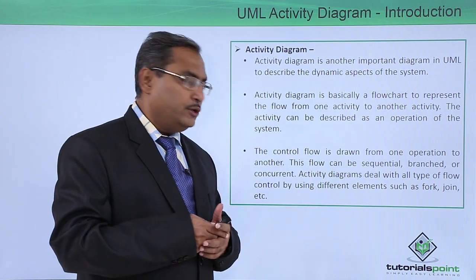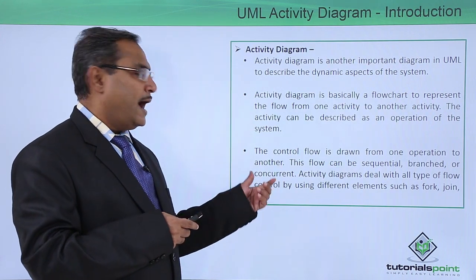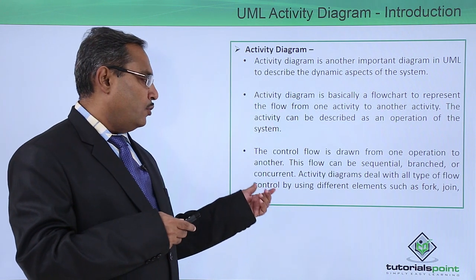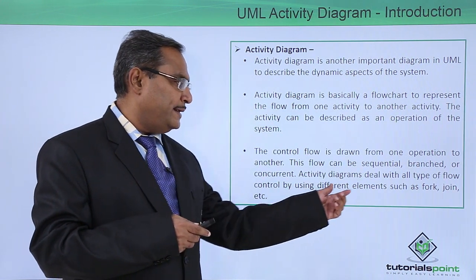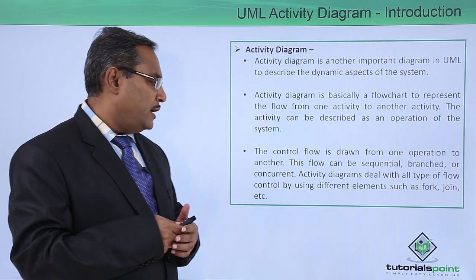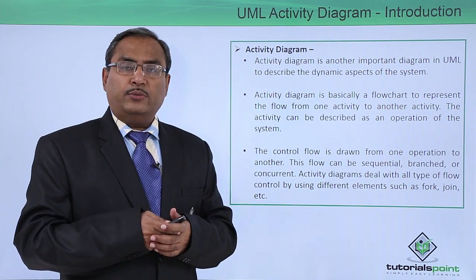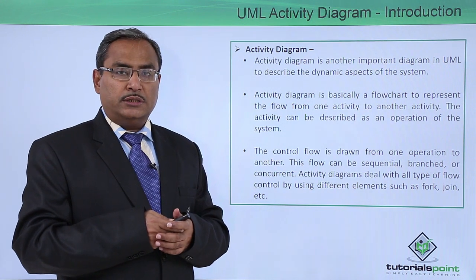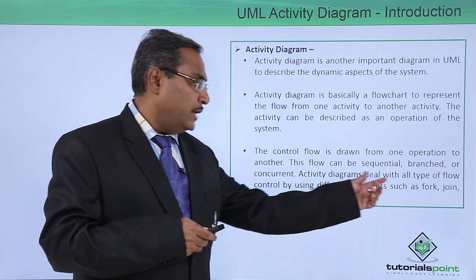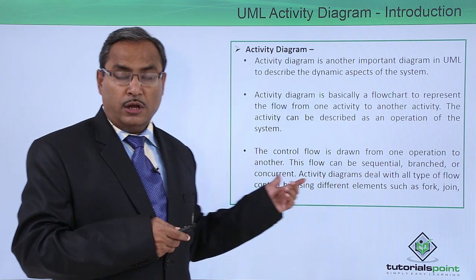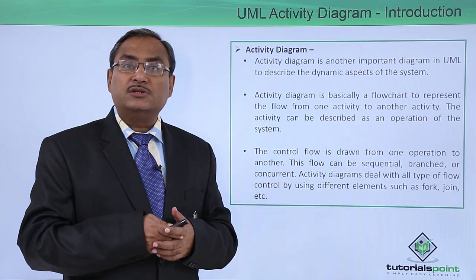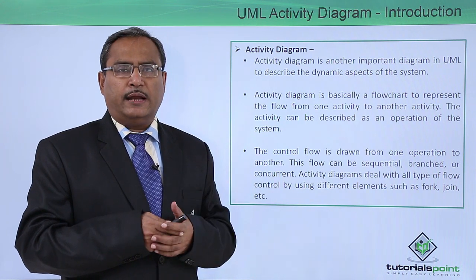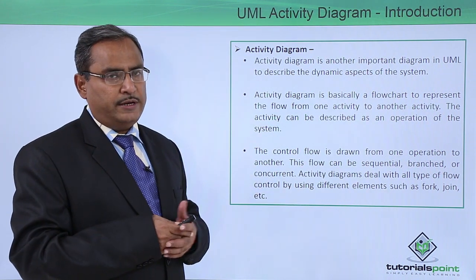This flow can be sequential, branched, and concurrent. Activity Diagram deals with all types of flow control by using different elements such as fork, join, etc. As you can see, we have different kinds of control: sequential control, branching control, concurrent control, and swim lane — all of which can be depicted in the form of an Activity Diagram.